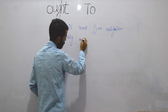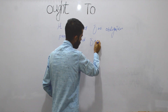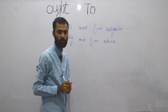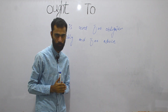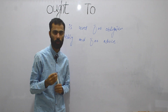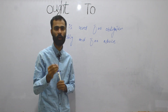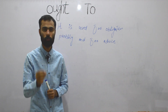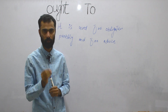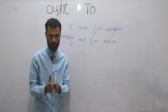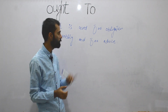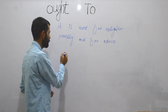This structure is used for obligation, probability, and for advice. When you are obligating someone for their responsibility, when you are predicting something, or when you are advising someone, you have to use 'ought to'.